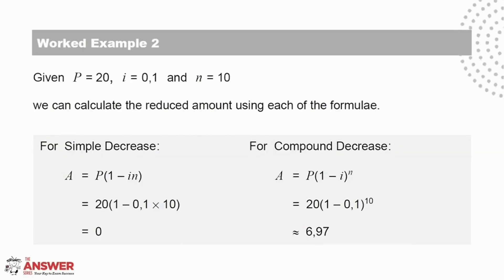Let's look at this worked example now. Substitute in the values for P, I, and N into each of the formulae. For simple decrease, we get an answer of 0. We will look further at this when we see the graphical representation of the scenario. And for compound decrease, we get an approximate answer of 6.97.